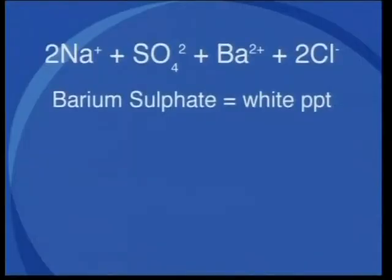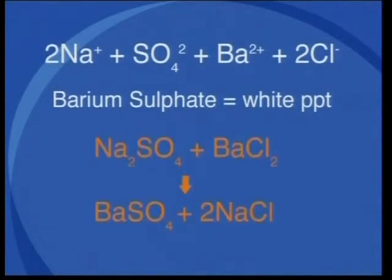To clarify the anion identification tests, let's have a closer look at the chemistry of some of these tests. For the sulfate test, the ions are sodium cations, sulfate anions, barium cations and chloride anions. Barium ions attract sulfate ions to form a white precipitate in an ion exchange reaction. Sodium sulfate plus barium chloride gives us barium sulfate plus sodium chloride.